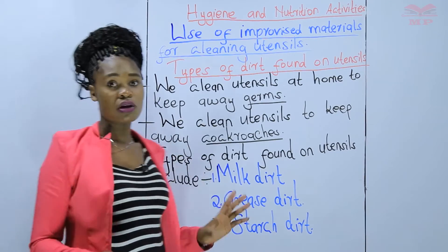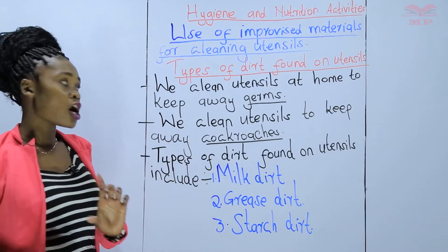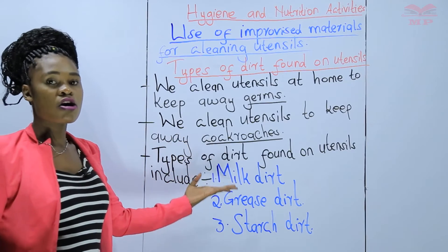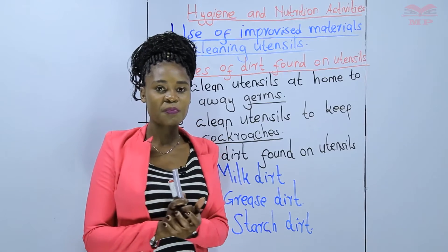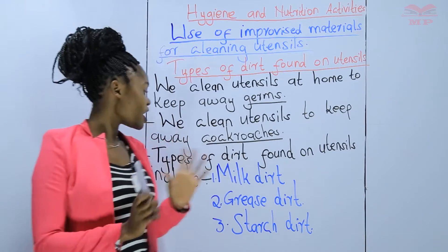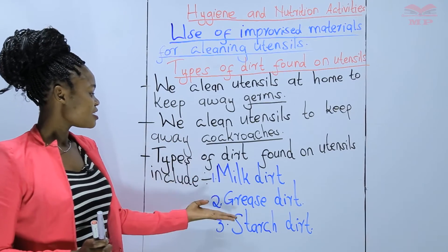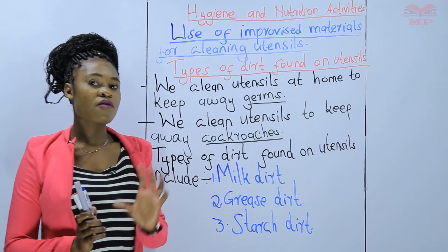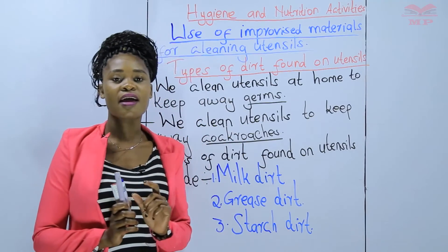We are supposed to clean our utensils every day — remember, to keep away germs and also to keep away pests like cockroaches. Back at home, I want you to visit your kitchen, check where the dirty utensils have been placed, and try to identify the three types of dirt: milk dirt, grease dirt, and starch dirt. Get ready with your exercise book, pencil, and rubber.